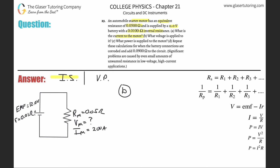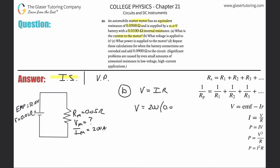Part B: what is the voltage supplied to the motor? Simply use Ohm's law — V = IR. The voltage supplied to the motor equals the current flowing through it multiplied by the resistance of the motor itself. We use only the motor's resistance here, not the total resistance. Plugging in the values gives us 10 volts.